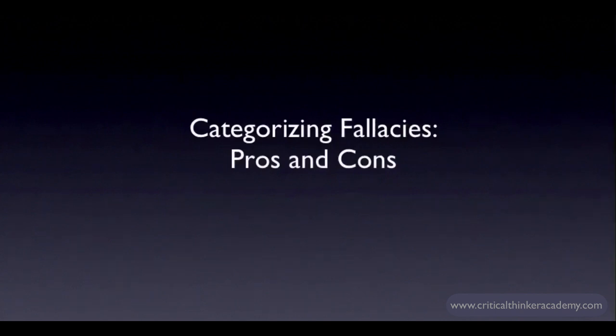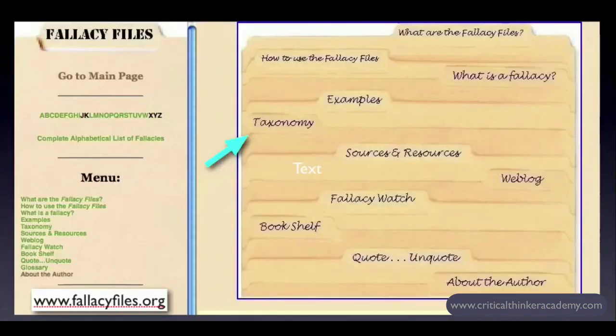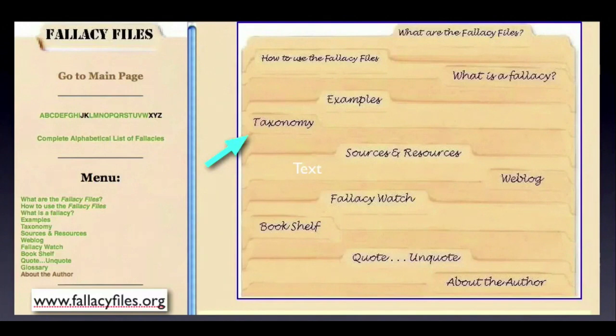Fallacies are often categorized into different groups or families. We've already seen one type of categorization between formal or structural fallacies and content fallacies. If you search online, it's not hard to find long lists of fallacies grouped into hierarchies like a biological classification scheme. Here's one example — Gary Curtis's website, fallacyfiles.org.